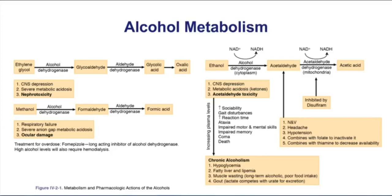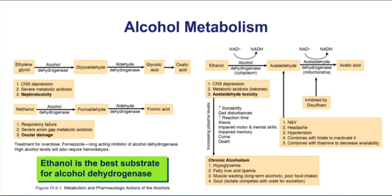What is the standard antidote for somebody who overdoses on an alcohol like ethylene glycol or methanol? The standard classic antidote would be ethanol. You give ethanol because it is the best substrate for the first enzyme in the pathway, alcohol dehydrogenase. Ethanol will outcompete the other alcohols.